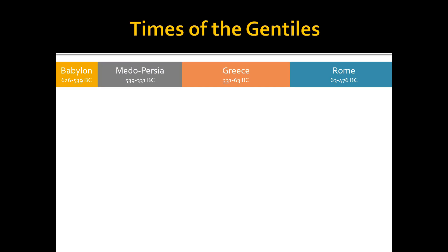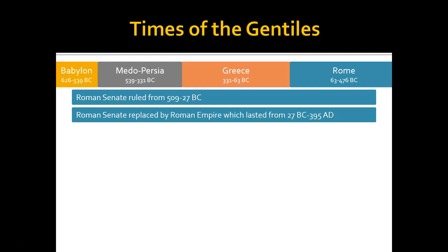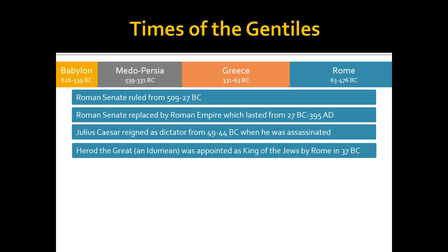The Roman Senate had ruled from 509 to 27 BC. They were not initially a world empire — largely dealing with things in Italy and maybe some things in Macedonia — but as their power grew, they stretched toward the east and down into Egypt. The Roman Senate was replaced by the Roman Empire, which lasted from 27 BC until 395 AD. Julius Caesar reigned as dictator from 49 to 44 BC when he was assassinated. Then Herod the Great, whom we read about in the New Testament Gospels — he was not a Jew but an Idumean — was appointed as King of the Jews by Rome in 37 BC.